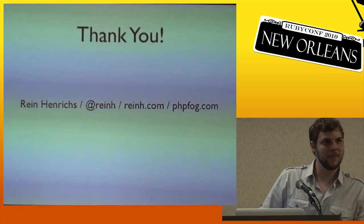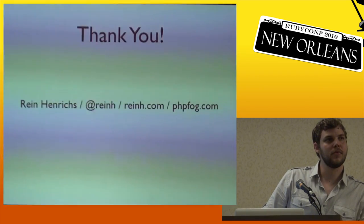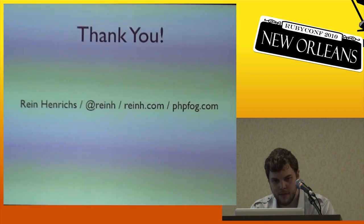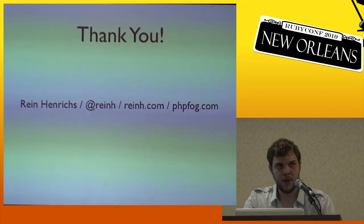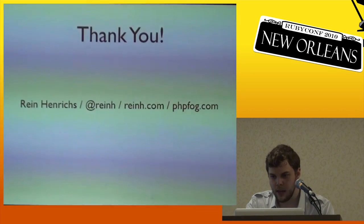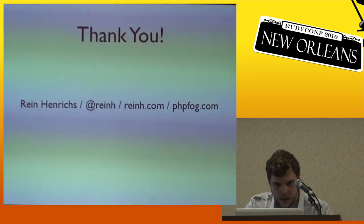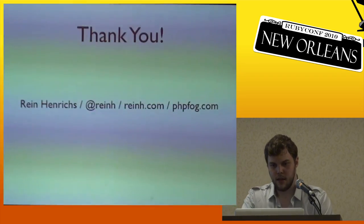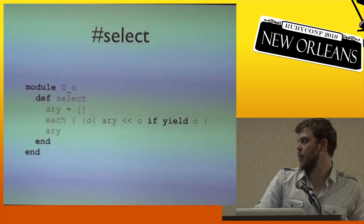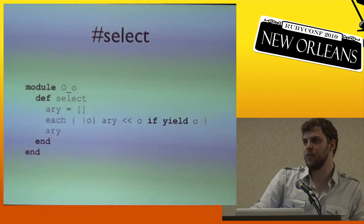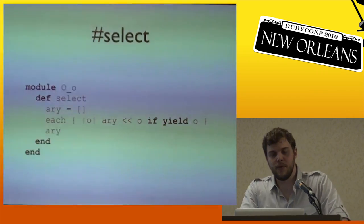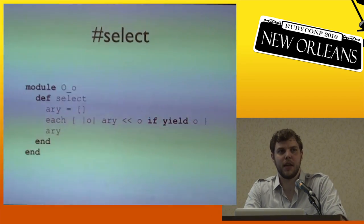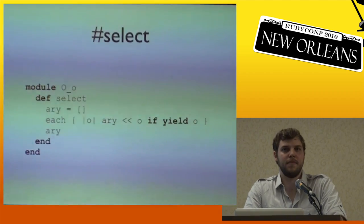An audience member asks about list comprehension and the concept similar to collect. The speaker notes there is an Enumerable method called select: for each object in the collection, if yielding that object returns a true value, add it to the result. For instance, if the collection is the range 1 to 10 and the block is odd?, that would return 1, 3, 5, 7, and 9.